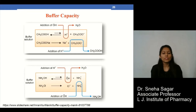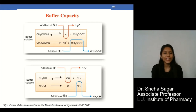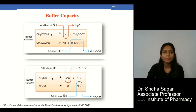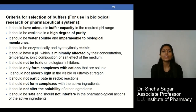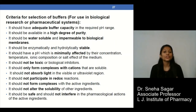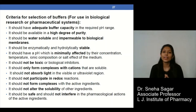Buffer capacity can be illustrated with examples such as acetic acid and sodium acetate, and NH₄OH and NH₄Cl. Criteria for selection of buffers include: adequate buffer capacity, high purity, water solubility, stability, non-toxicity, no light absorption, and it should be inert and safe in nature.